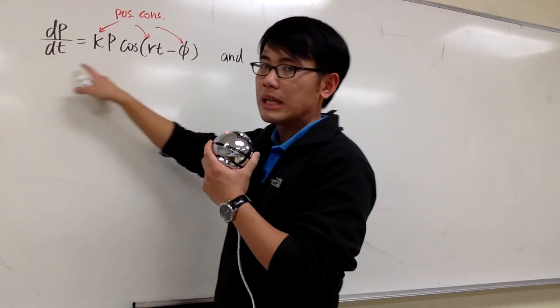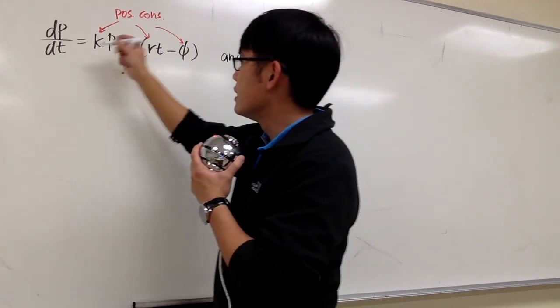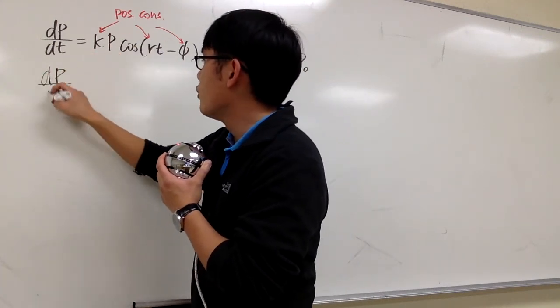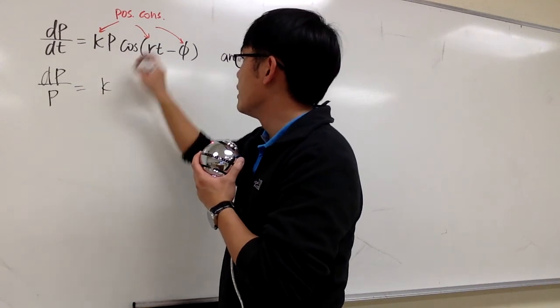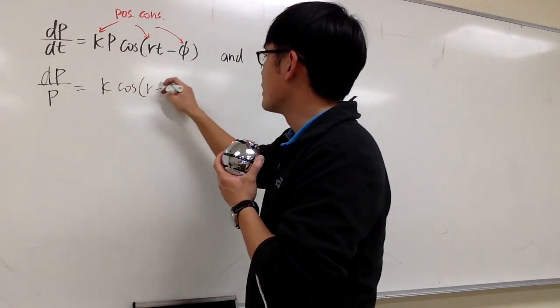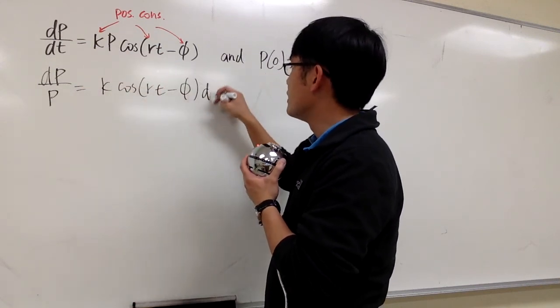So let's divide both sides by p, multiply dt on both sides. So we have dp over p equals k cosine of rt minus v, and we have the dt right here.